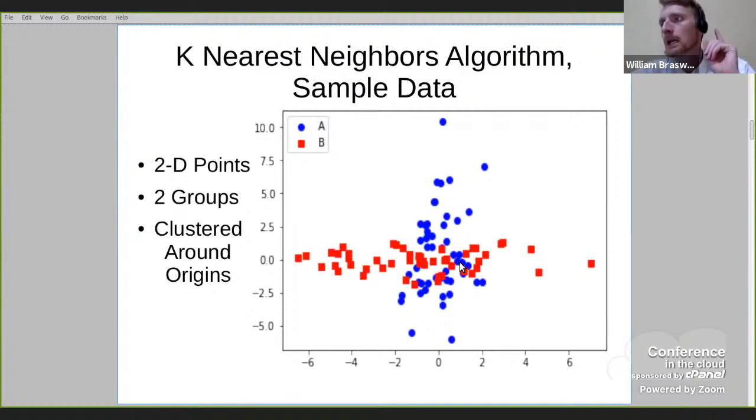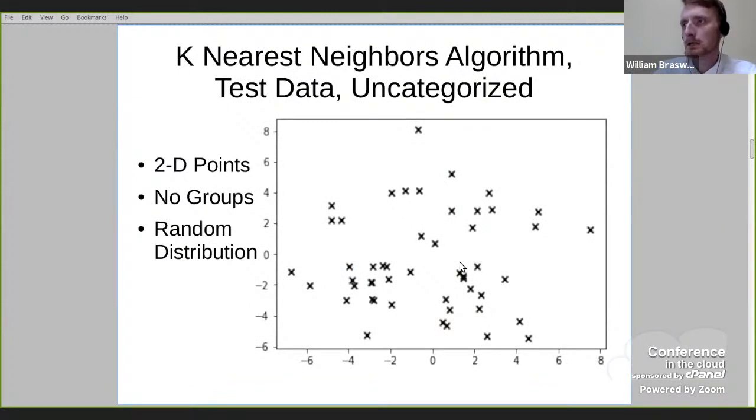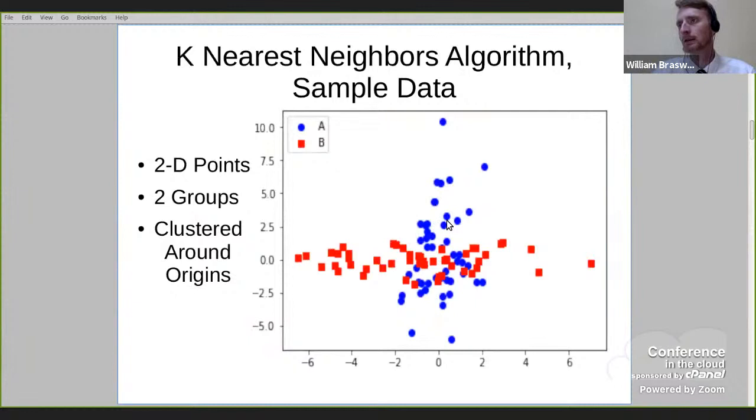Next step is we give it some test data. Here you can see the test data. This test data is literally just randomly generated. It's a random number generator that generated random data within this window of range of values, and it's really not clustered in any way. It's actually totally random, or at least as pseudo random as we can get on a random number generator on a computer. There's no grouping assigned at this point. These data points have no classification, no categorization, no grouping applied to them. And again, it's totally random distribution at this time.